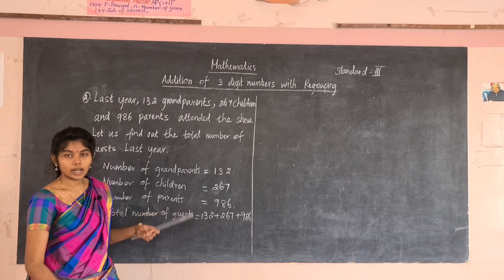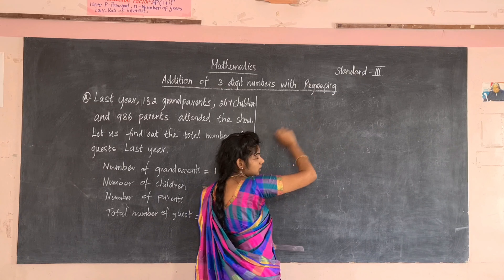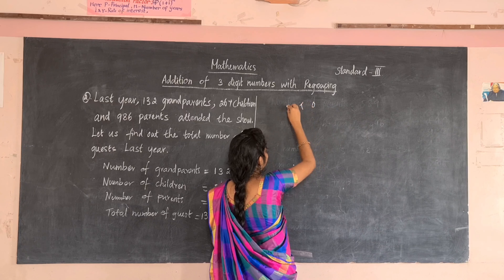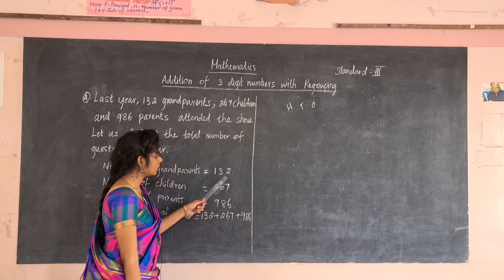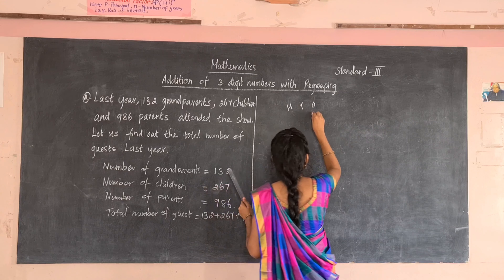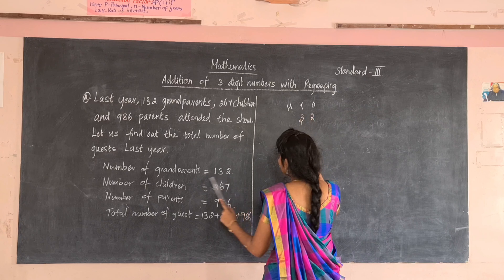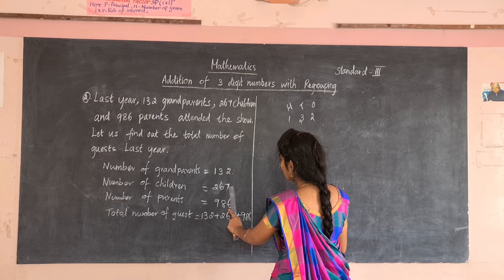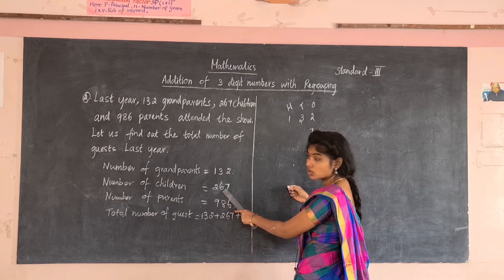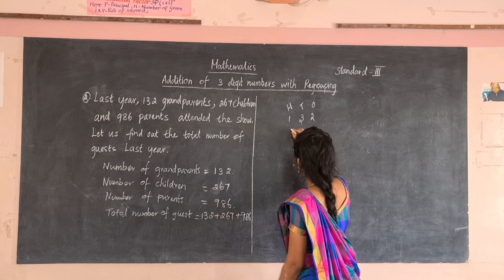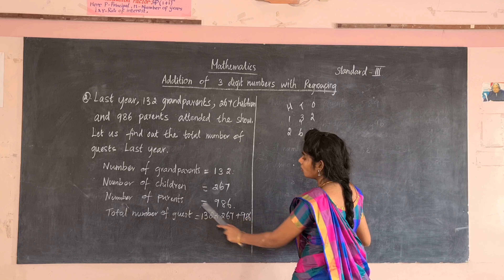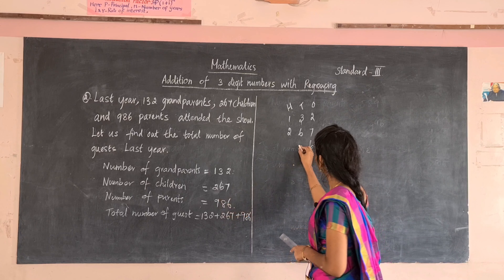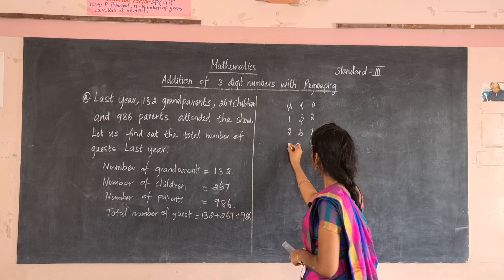Write the place values. Since they are three-digit numbers, write up to hundreds: ones, tens, and hundreds. First number 132: two in the ones place, three in the tens place, one in the hundreds place. Next, 267: seven in the ones place, six in the tens place, two in the hundreds place. Then 986: six in the ones place, eight in the tens place, nine in the hundreds place.